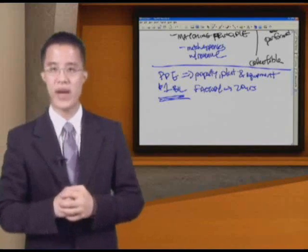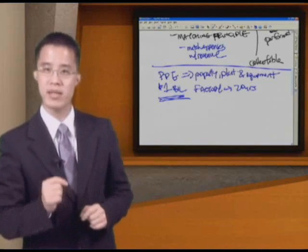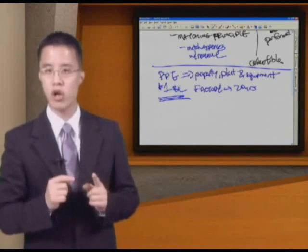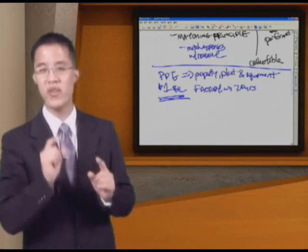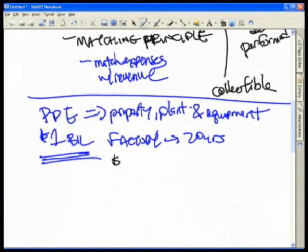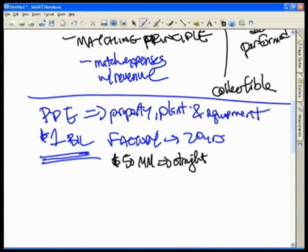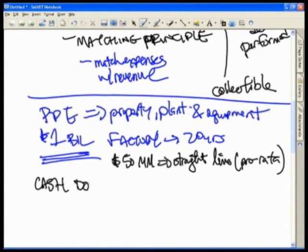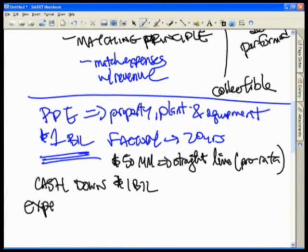So let's assume our billion dollar factory has a 20 year useful life. That means on a billion dollar cost, I will now depreciate this factory at 50 million dollars a year for 20 years. So I would depreciate 50 million dollars a year assuming straight line depreciation, pro rata. In the first year you will have cash going down by a billion dollars, assuming you pay all in cash. But you will only be able to recognize your expense of 50 million dollars a year.